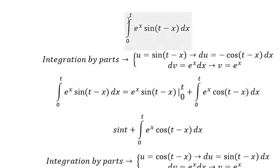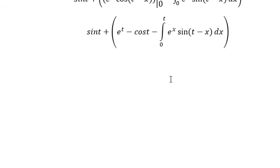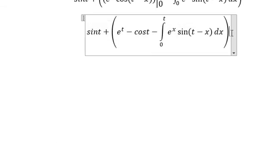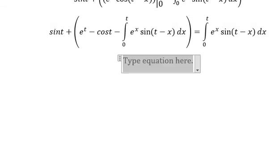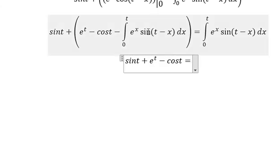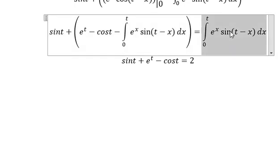Now we know that we have this one in here, similar for this one. And we know everything in here equals to this integration. So we put sine t, e to the power of t minus cos t on the left. We put this one on the right, and we get number two of this one.